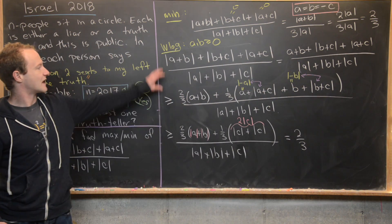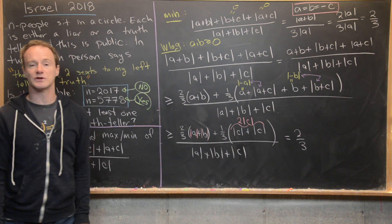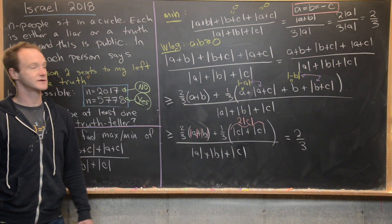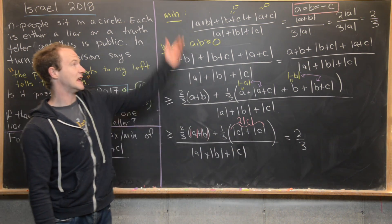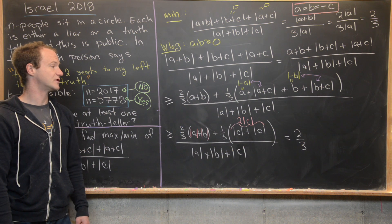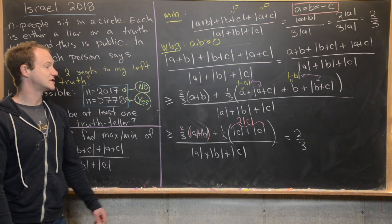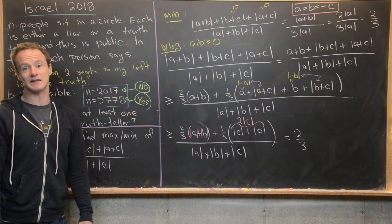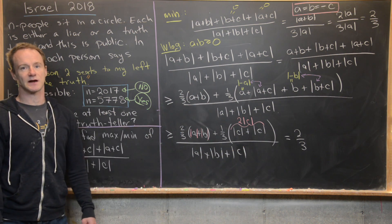So our expression is always greater than or equal to 2/3. Combined with the fact that 2/3 is achieved when A = B = -C with A ≠ 0, we conclude 2/3 is the minimum. The maximum is 2 and the minimum is 2/3, and that's a good place to stop.